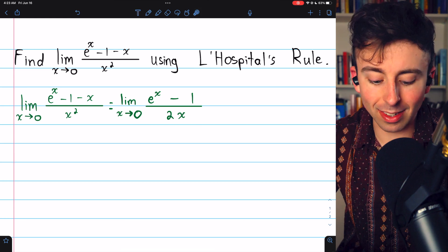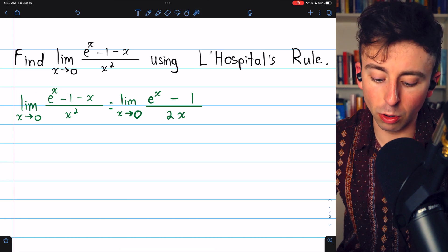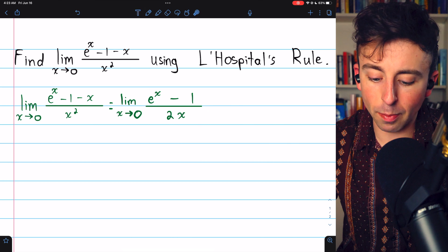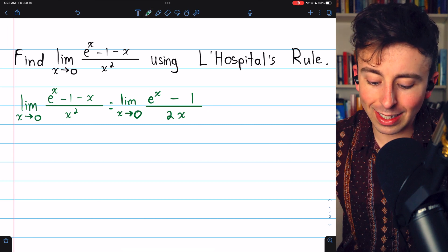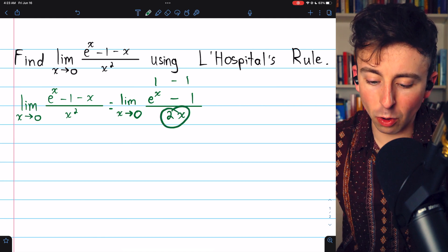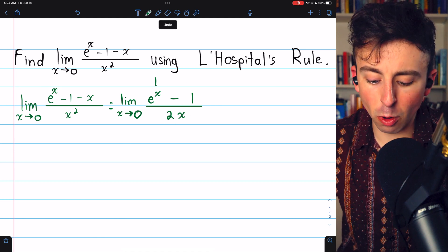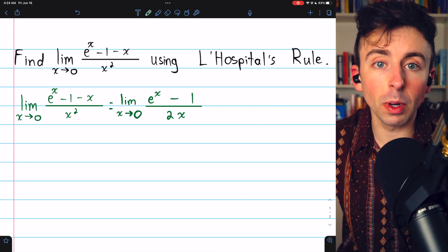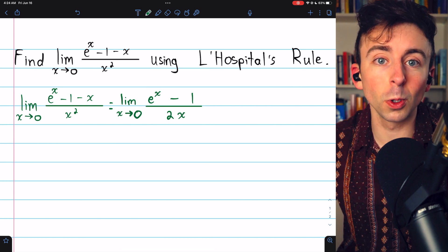So, if this limit exists, then it is equal to this limit. If we try to plug in 0 now, we get e to the 0, which is 1, minus 1, and in the denominator, we get 0. So, it's still 0 over 0. It's still an indeterminate form. We can apply L'Hospital's rule again.